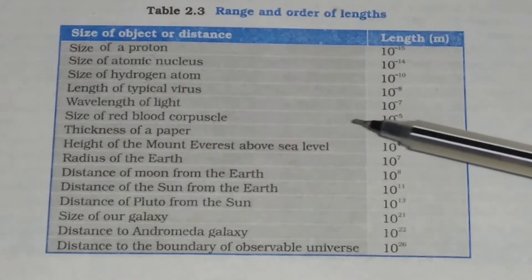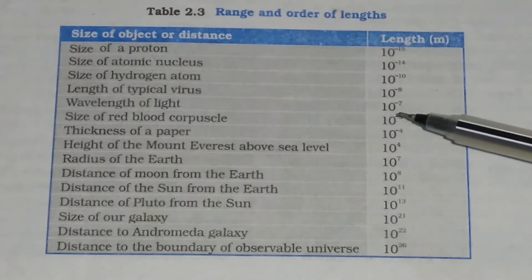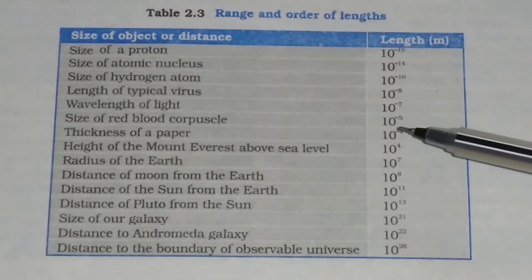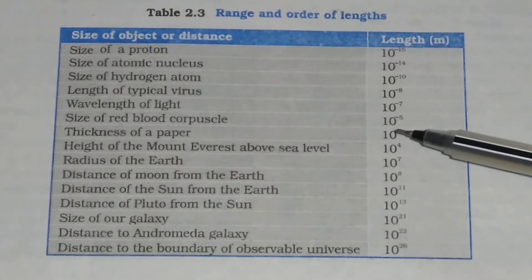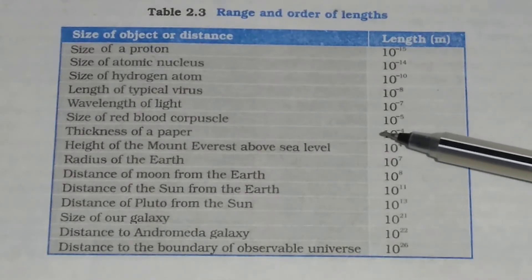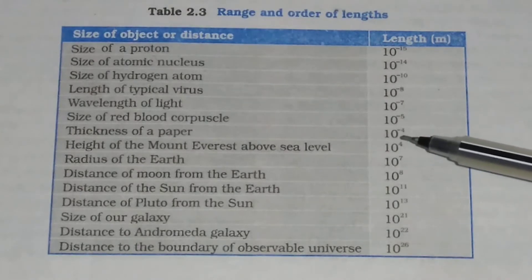Similarly, wavelength of light is 10 to the power minus 7 meter. Size of RBC red blood corpuscles is 10 to the power minus 5 meter. Similarly, thickness of a paper is 10 to the power minus 4 meter.